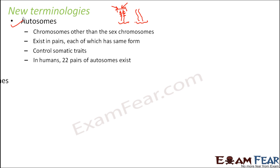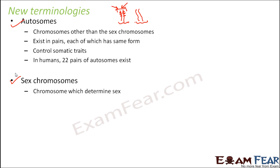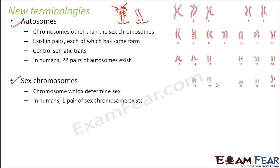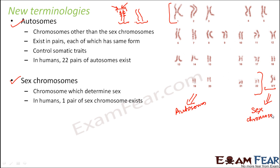The other type of chromosome is the sex chromosome — the last pair — which determines the sex of an individual. This chromosome decides whether a person is going to be male or female. In humans, one pair of sex chromosomes exists; one part comes from the mother and the other from the father. In the list of all 46 chromosomes in the human body, chromosomes 1 through 22 are autosomes, and the last pair is the sex chromosome, which decides whether the person is male or female.